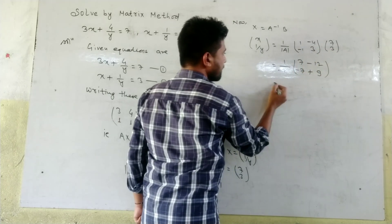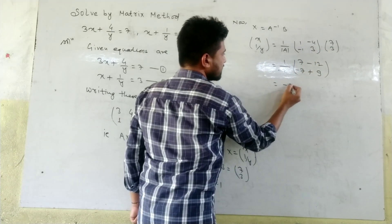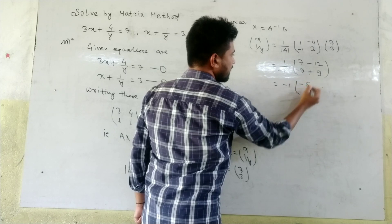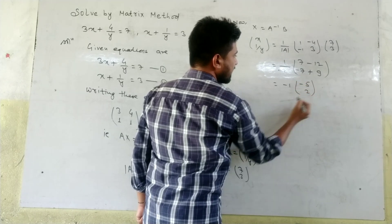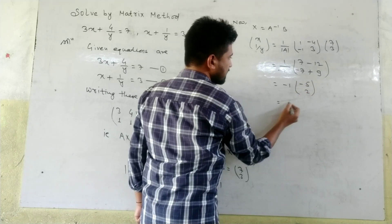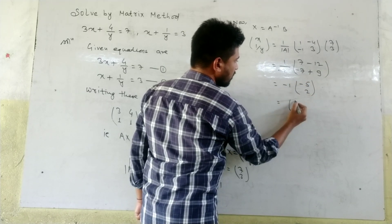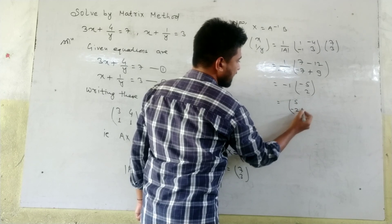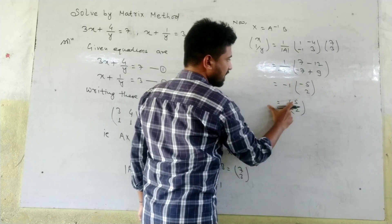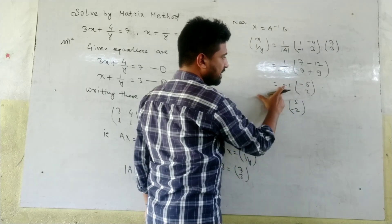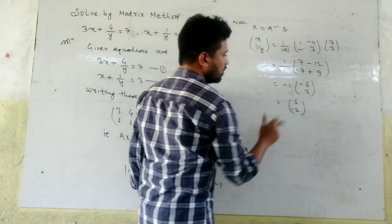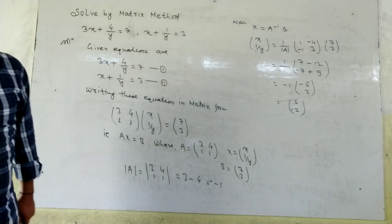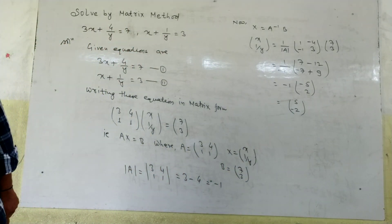We then multiply by 1 over determinant A, which is minus 1. So [x; 1/y] = (1/−1)·[−5; 2] = [5; −2].